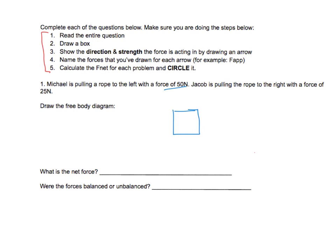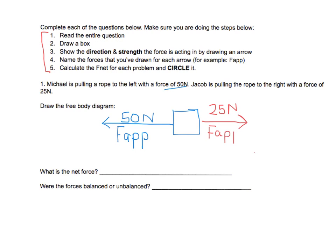The first thing says that Michael is pulling it to the left with a force of 50 Newtons. So we're going to draw a vector and label it with 50 Newtons. A push or a pull — in this case it's a pull — is applied force, so we're going to label that F-A-P-P. Next, Jacob is pulling the rope to the right with a force of 25 Newtons. We're going to draw a smaller vector to the right, 25 Newtons, and this is also a pull, so this is also going to be applied force.